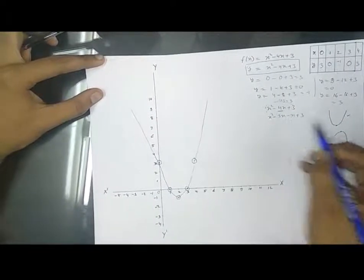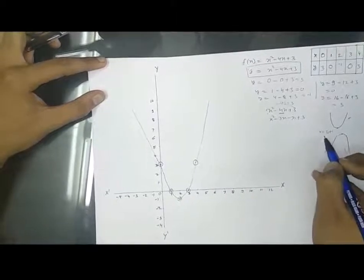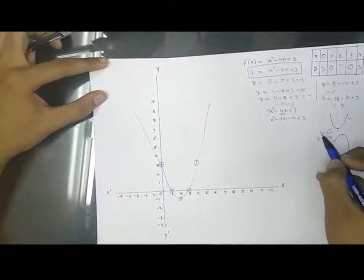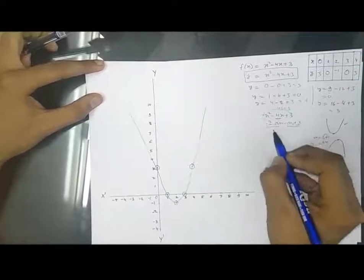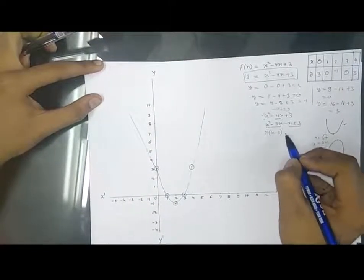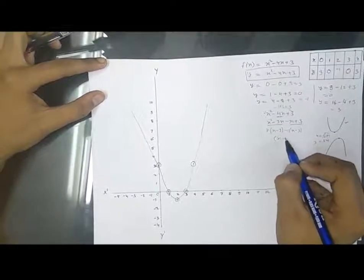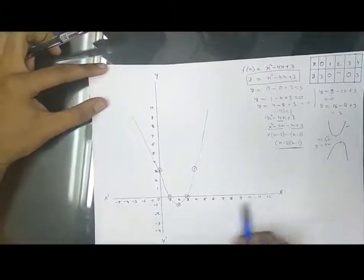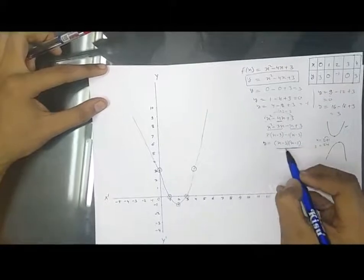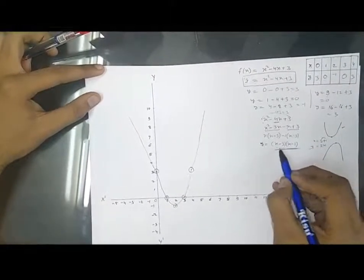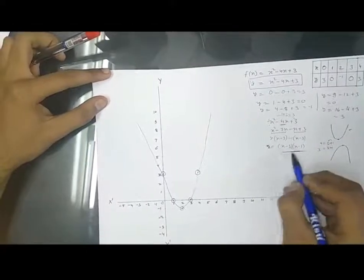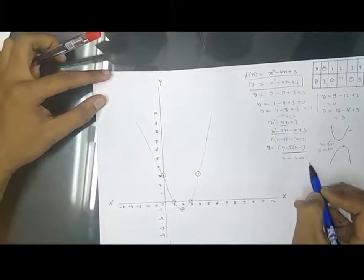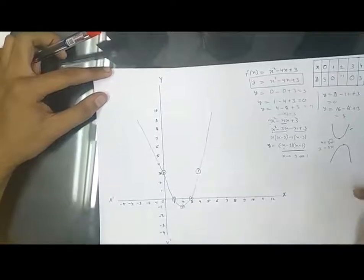To factorize x² - 4x + 3, I break -4x as -3x - x, since the product 3 × 1 = 3 and the sum 3 + 1 = 4. Taking common factors: x(x - 3) - 1(x - 3) = (x - 1)(x - 3). Setting y = 0, either x = 1 or x = 3. So (1, 0) and (3, 0) are the two x-intercepts — these are the roots of the polynomial.